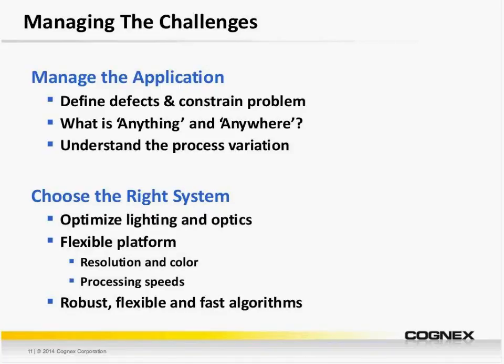You also want to choose a system with the right processing speed to handle your throughput — the last thing we want as a vision company is to be the bottleneck in your operation. You'll also want the appropriate pixel resolution. What's the most marginal defect we're looking for? Would a standard 640x480 resolution pick up all the features, or do we need to go to a 5-megapixel camera? And finally, you want robust algorithms — both fast and flexible — that can handle the natural process variation you may encounter on a daily basis or during the life of the inspection.